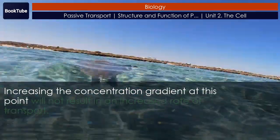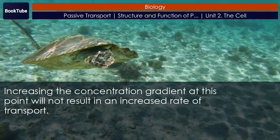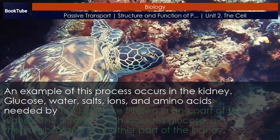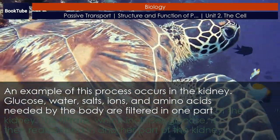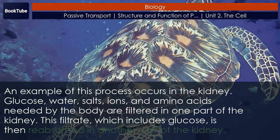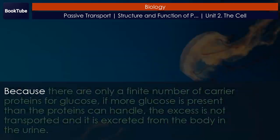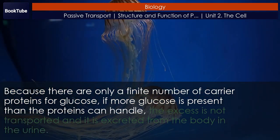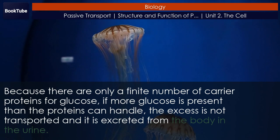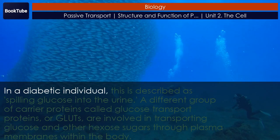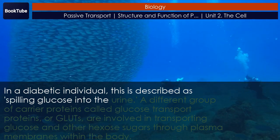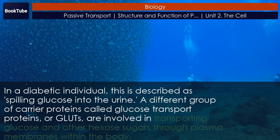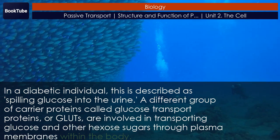Increasing the concentration gradient at this point will not result in an increased rate of transport. An example of this process occurs in the kidney. Glucose, water, salts, ions, and amino acids needed by the body are filtered in one part of the kidney. This filtrate, which includes glucose, is then reabsorbed in another part of the kidney. Because there are only a finite number of carrier proteins for glucose, if more glucose is present than the proteins can handle, the excess is not transported and it is excreted from the body in the urine. In a diabetic individual, this is described as spilling glucose into the urine. A different group of carrier proteins, called glucose transport proteins, or GLUTs, are involved in transporting glucose and other hexose sugars through plasma membranes within the body.